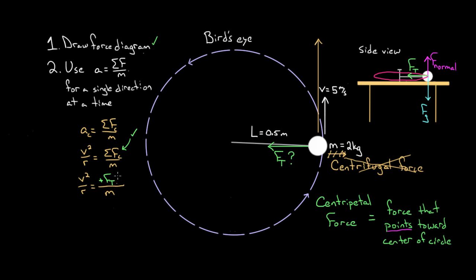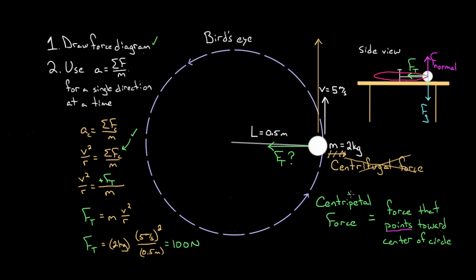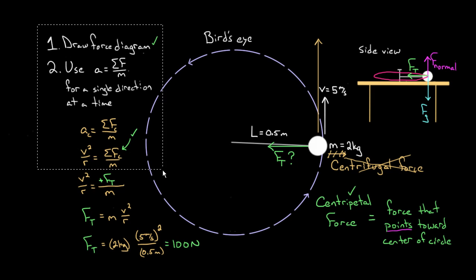Finally, we can solve for the force of tension. Multiplying both sides by mass, we get that the force of tension equals mass times speed squared over the radius of the circle. Plugging in values — mass of 2 kg, speed of 5 m/s (squared), divided by radius of 0.5 m — we get that the force of tension is 100 Newtons. This was a straightforward problem, but if you don't have a problem-solving framework to fall back on, you'll be shooting blind.